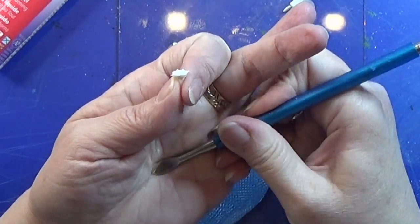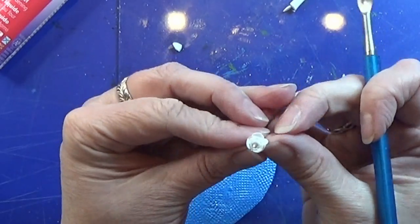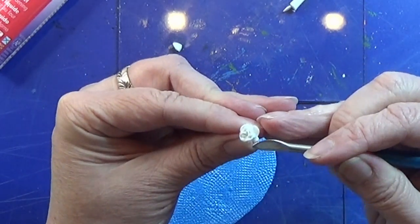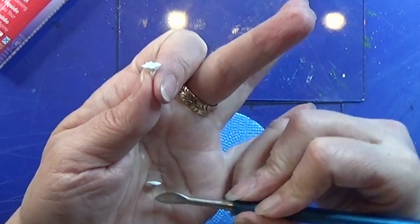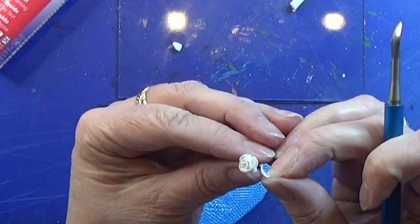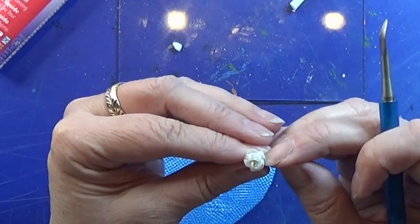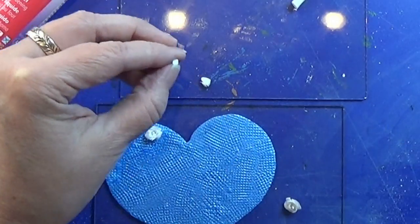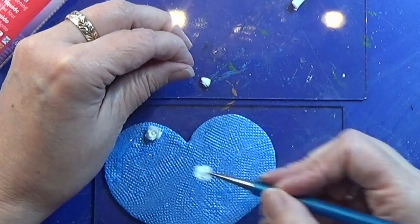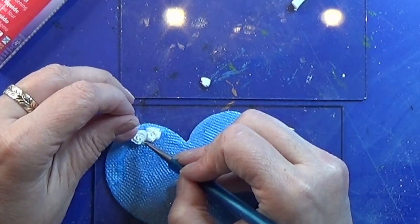When I like the result of my rose I am just taking my exacto knife and cutting off the bottom part of it so it's flat in the bottom and placing it here on the heart where I like it to be. I have some bake and bond underneath where I place the flower. You can use some fumo liquid instead if you don't have bake and bond.